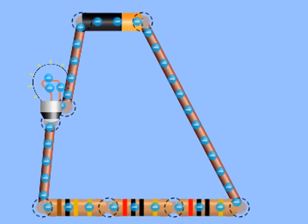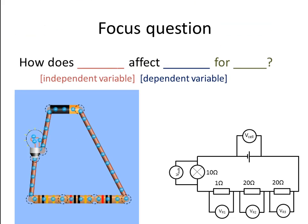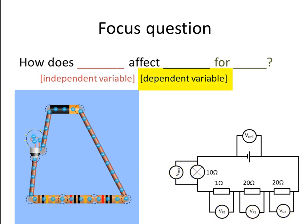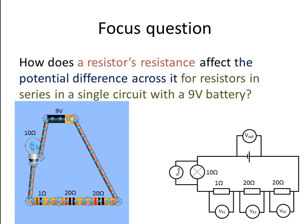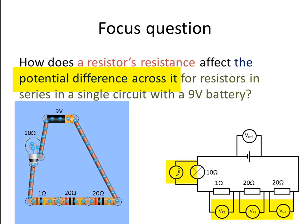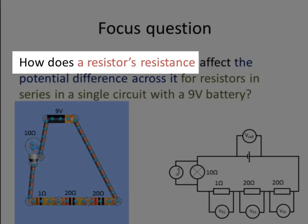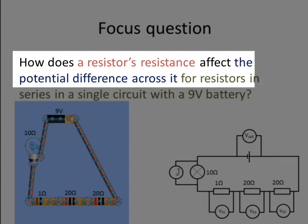We open our simulation, where I have already built the circuit. What is the question we are trying to answer? What is our independent variable — what do we vary between the treatments? Our treatments are within the circuit; we focus on different parts of the circuit and what is different between those parts. Our independent variable is a resistor's resistance, and our outcome measurement is the potential difference across that resistor. So our question is: how does a resistor's resistance affect the potential difference across it?